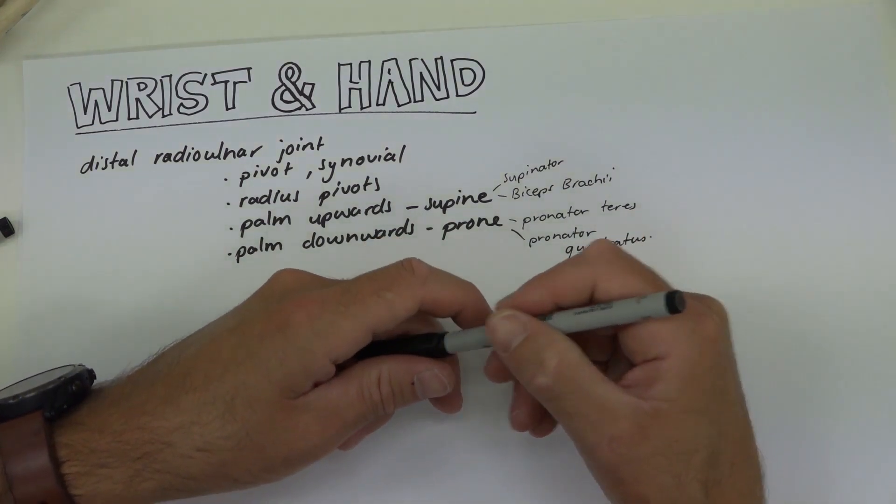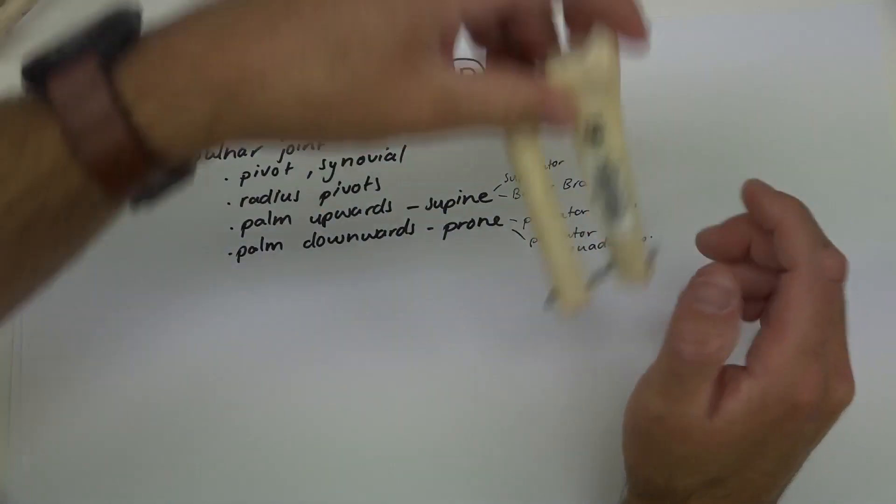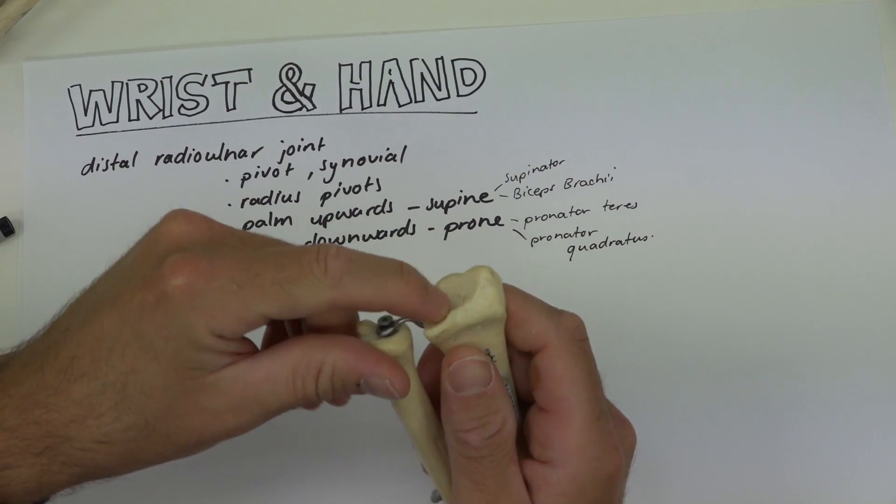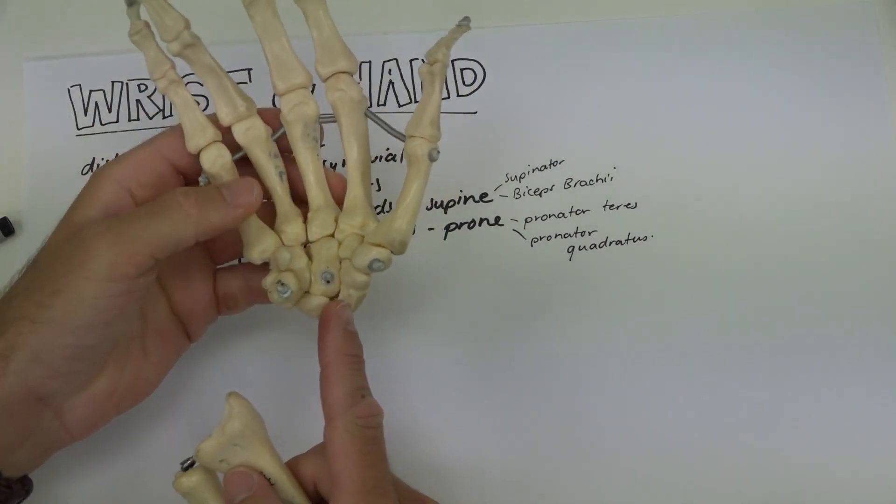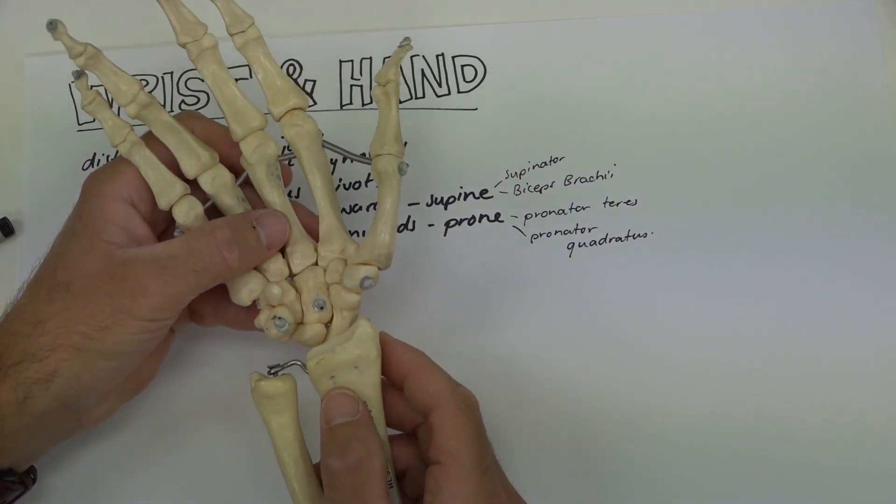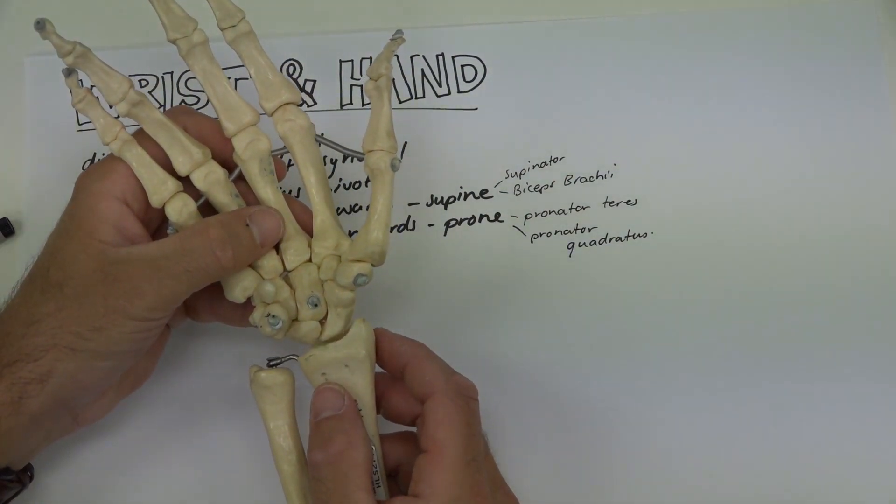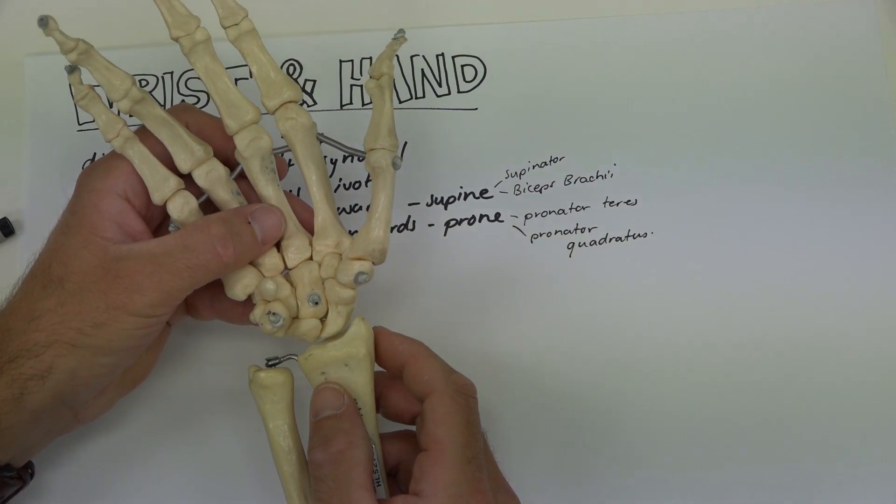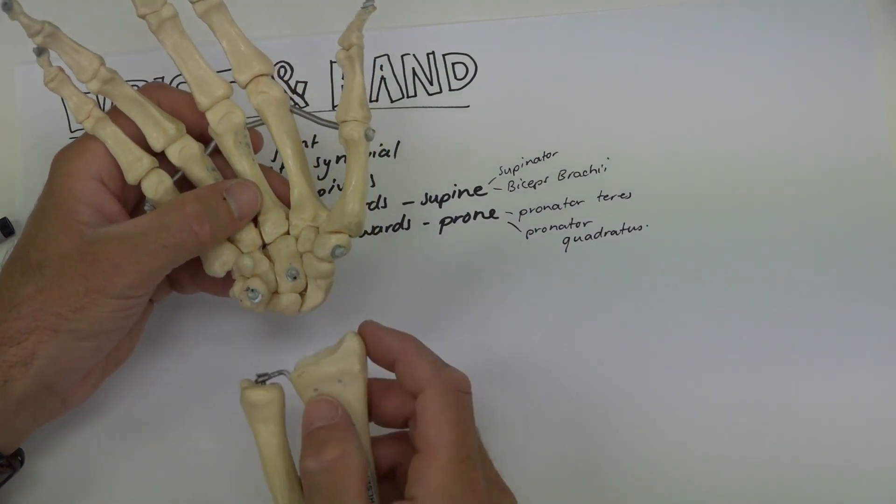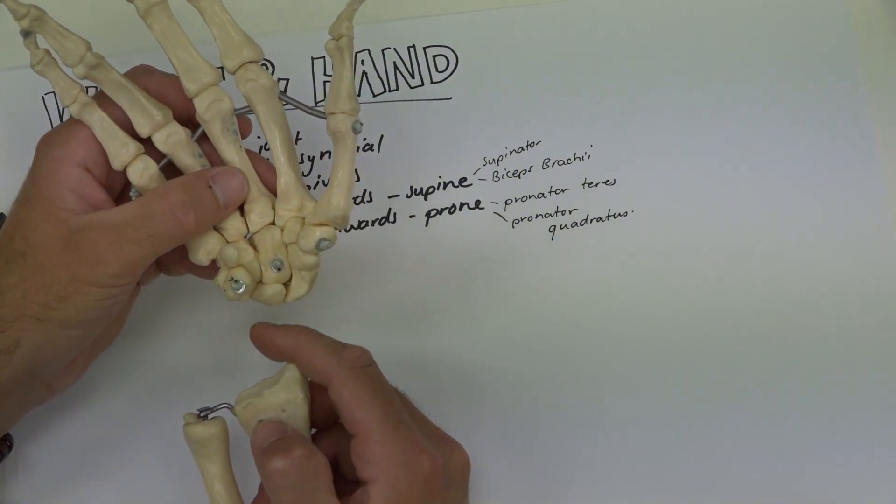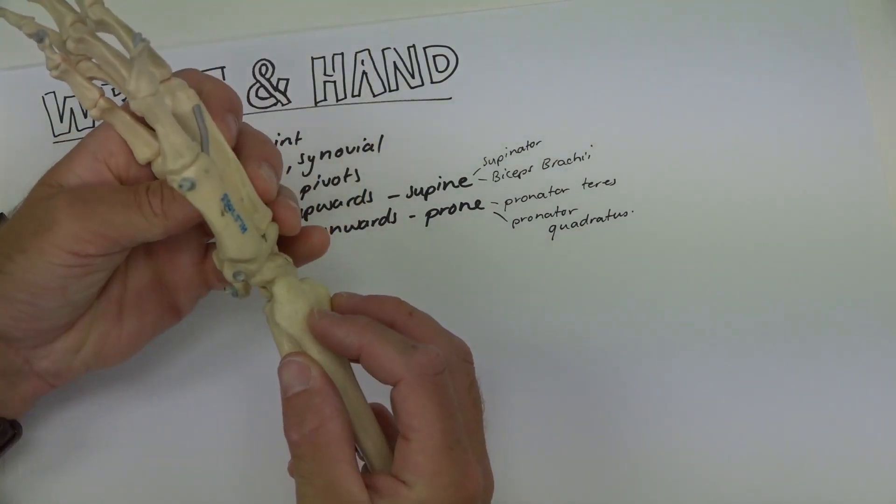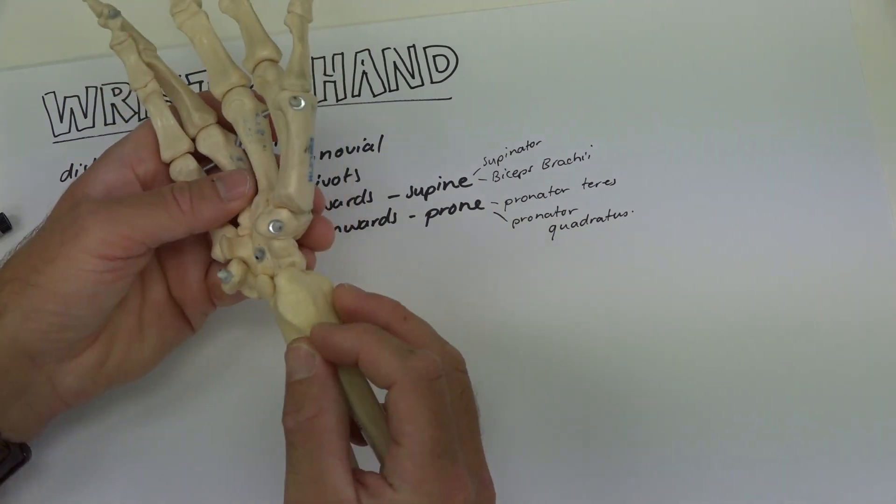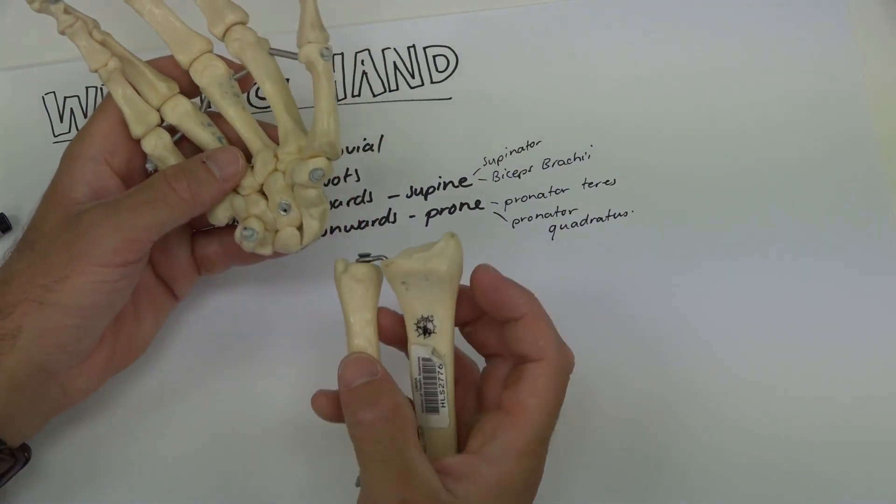We have the articulation between the distal end of the radius and two of the proximal row of carpal bones. The ulna does not contact the carpus or carpal bones, so there is an indirect articulation occurring here. That's why when you pronate, the hand would rotate with the radius and the ulna stays still.